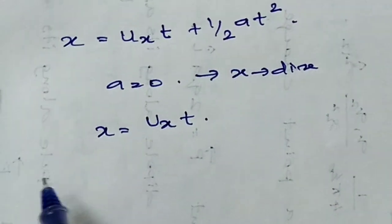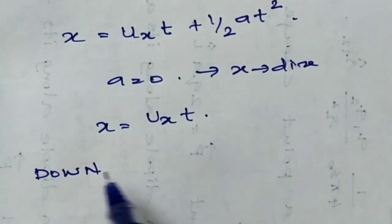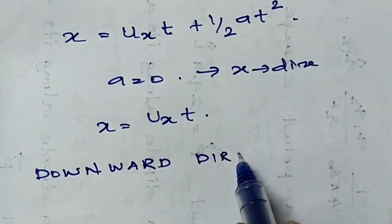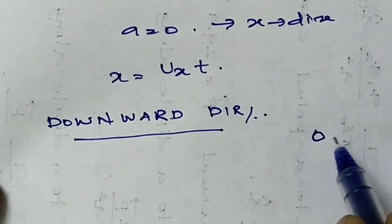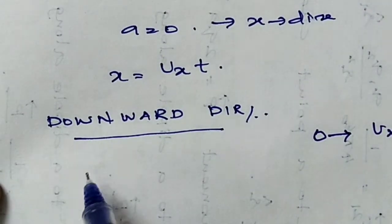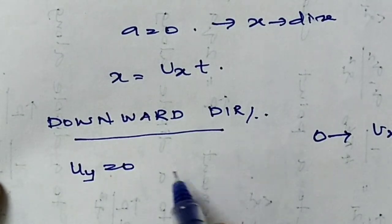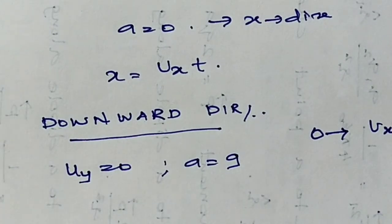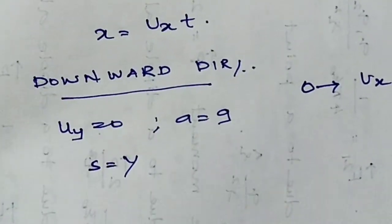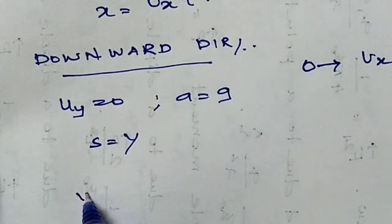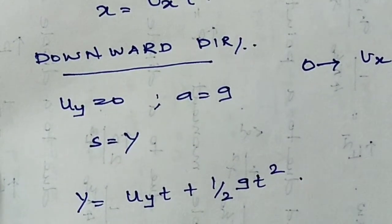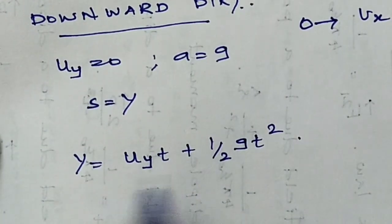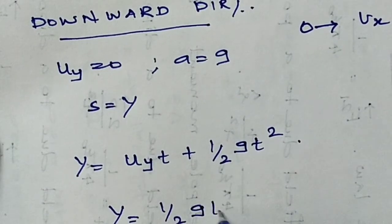Now moving to the motion along the vertical (downward) direction. Taking the vertical distance y at time t using the equation: y = Uy·t + ½g·t². Since the initial vertical velocity Uy is zero, the term reduces to zero, giving y = ½g·t².